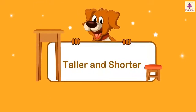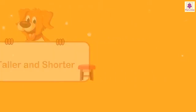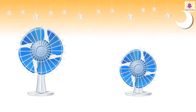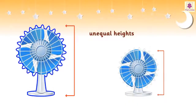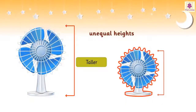Taller and Shorter. When we have two objects of unequal heights, we say one object is taller and the other one is shorter.